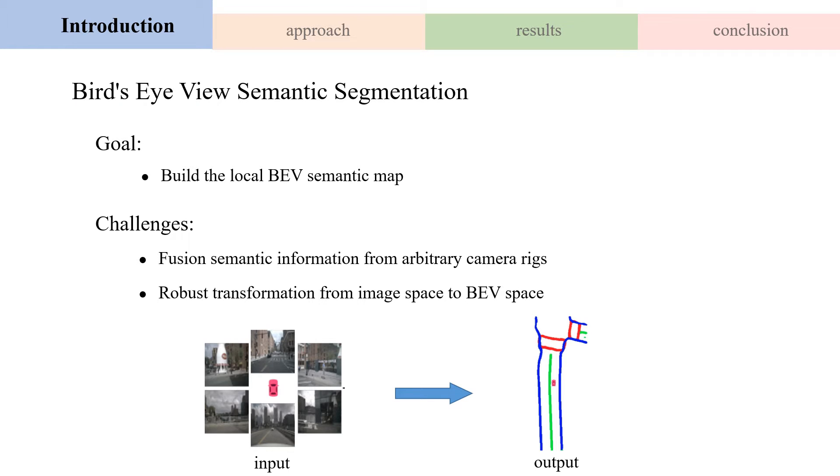The goal of BEV semantic segmentation is to build the local BEV semantic map. It is critical in autonomous driving or robot navigation systems. How to fuse semantic information from arbitrary camera rigs and robustly complete the transformation from image space to BEV space has become a challenge for the BEV segmentation task.